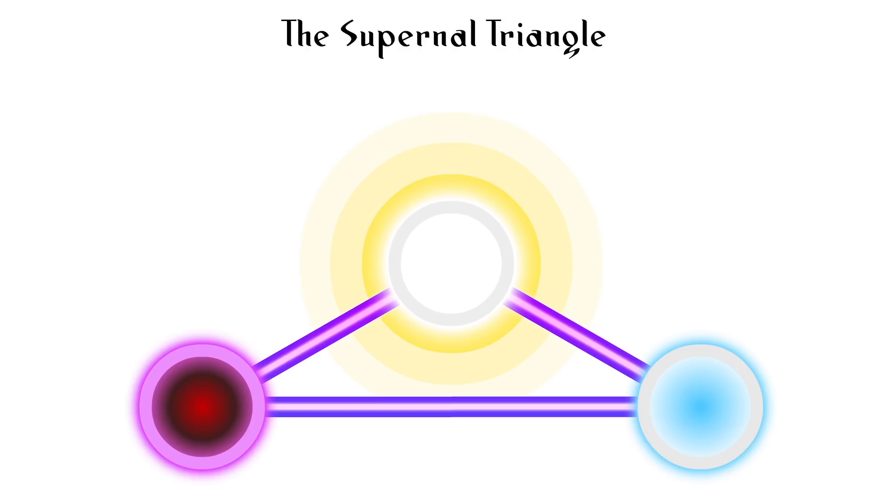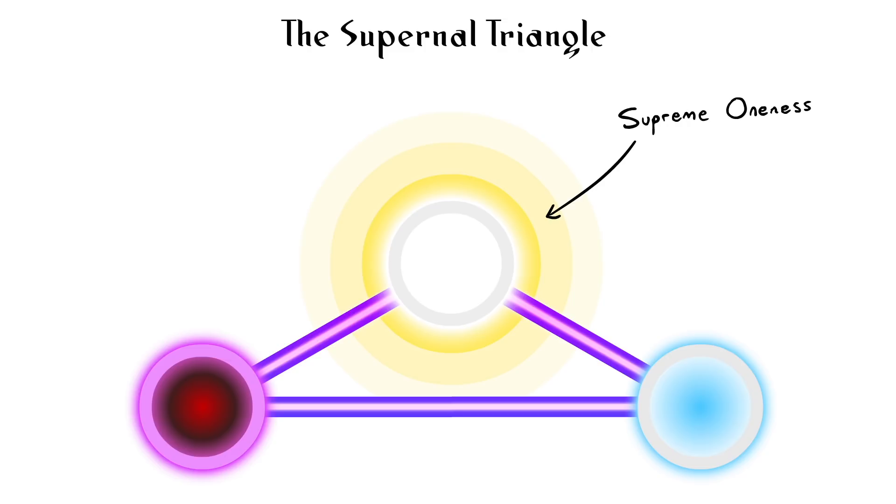The tree also has three triangles. The supernal triangle is made up of the top three Sephira and represent the three states of God, the supreme oneness from which all things emerge, the divine masculine and the divine feminine emanations which go on to create all things.